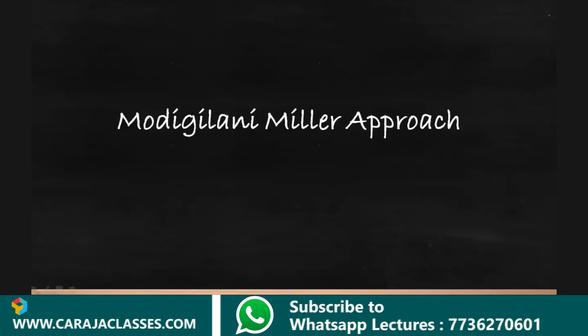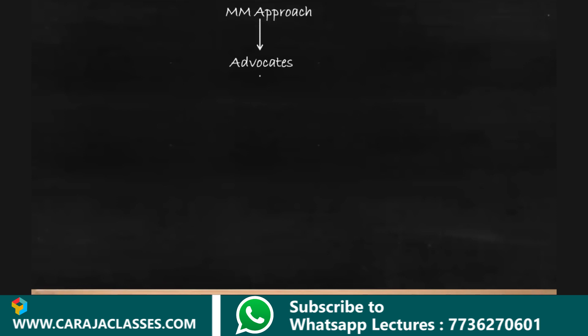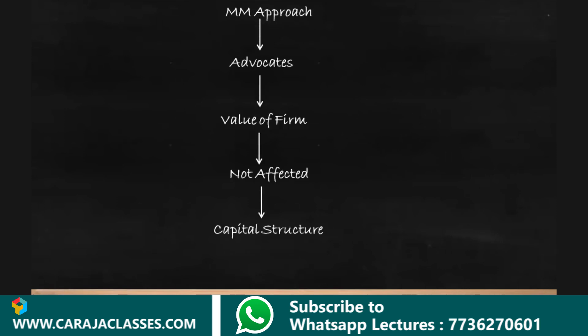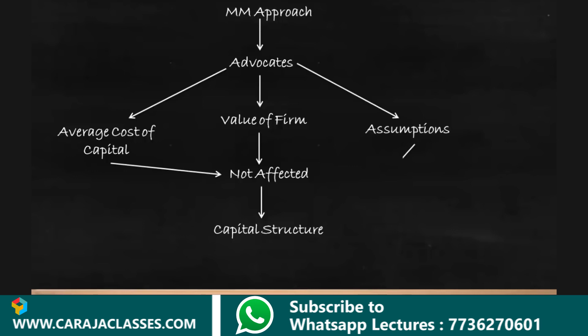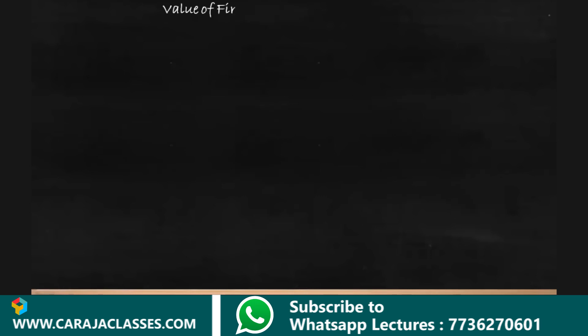The Modigliani-Miller (MM) approach is one of the capital structuring theories. It advocates that the value of a firm is not affected by capital structure, and the average cost of capital is also not affected by capital structure. This approach assumes there are no corporate taxes and no transaction costs.